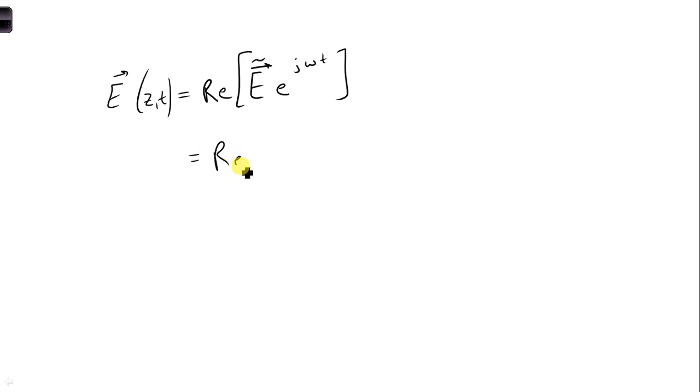So if we do that, we're going to take the real part of y hat 10, e to the j 0.2 z. And then we're going to be putting in e to the j omega t.